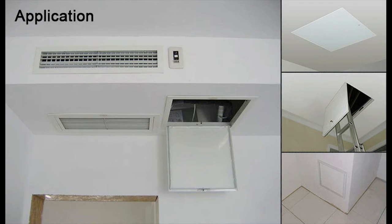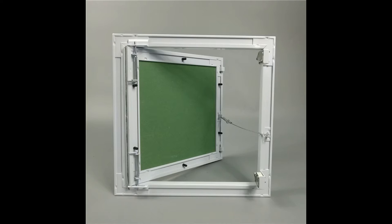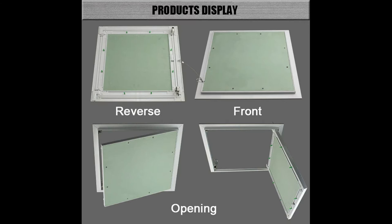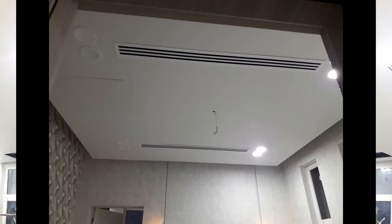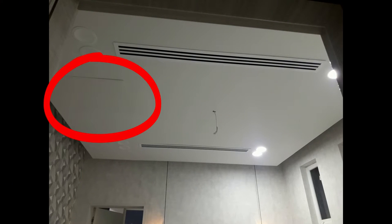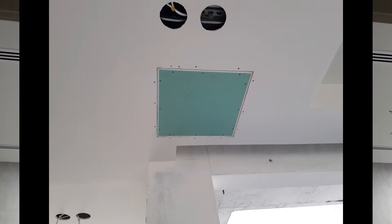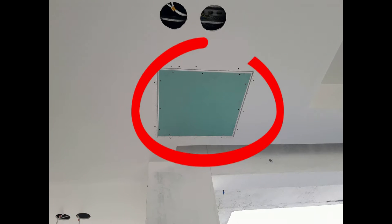Assalamualaikum dear friends, today I will show you how to install a ceiling access door. There are lots of types of ceiling access doors. Here I have taken a Zipsum ceiling access door and its size is 60 by 60 centimeter. Let's see the practical installation process.